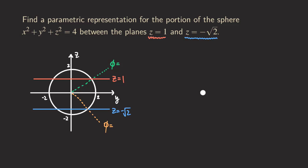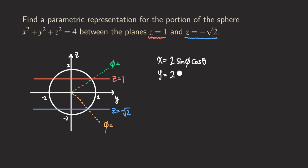We will figure out the bounds shortly. We start by writing the parametrization. Because the surface is still part of a sphere, we use spherical coordinates: x equals two sine phi cosine theta, y equals two sine phi sine theta, and z equals two cosine phi. The radius is two, so rho equals two. This part is routine work.